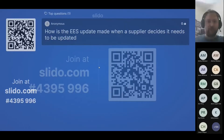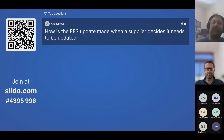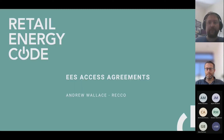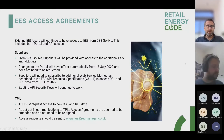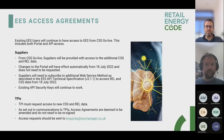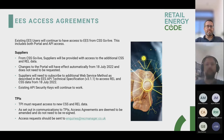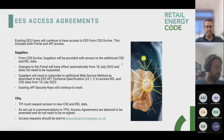Andrew Wallace, RECO Switching Programme Implementation Manager, provides a quick overview of practical and contractual requirements around access to EES after CSS go live. Firstly, if you are an existing EES user — such as a supplier, a TPI, an amendment, etc. — you will continue to have access to EES from CSS go live. That includes both your access to the web portal and to the API. You don't have to do anything to continue to get that access.